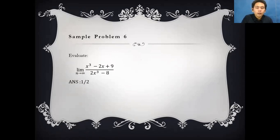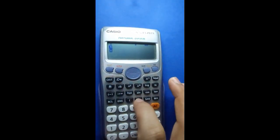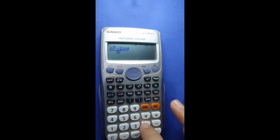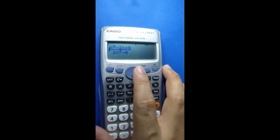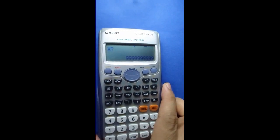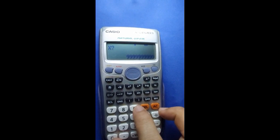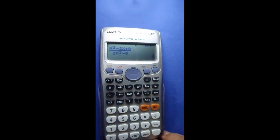Another basic calculator technique is finding limits. For a limit as x approaches infinity, we input the equation itself — for example, (x cubed minus 2x plus 9) over (2x cubed minus 8) — then press Calc. Since it approaches infinity, we type a very large value of x, such as 9 nines, representing infinity. The answer is 1/2.